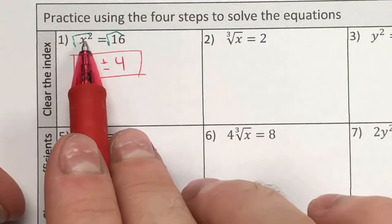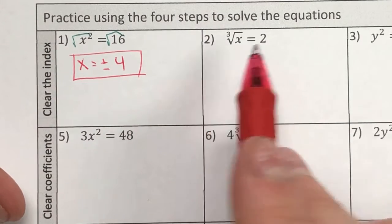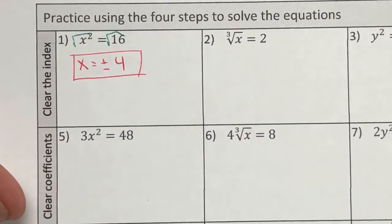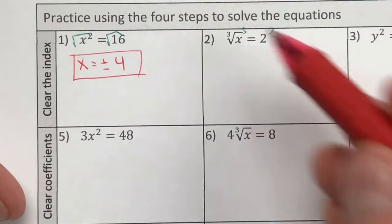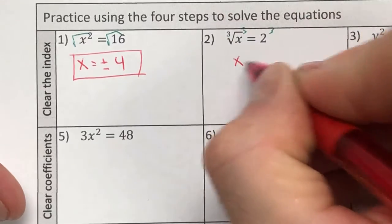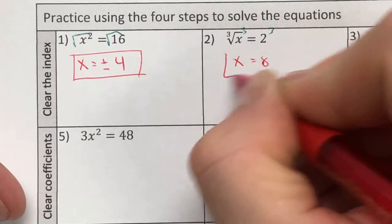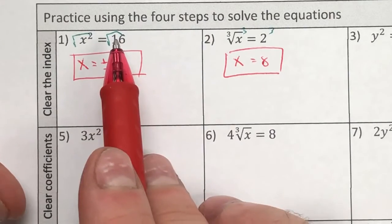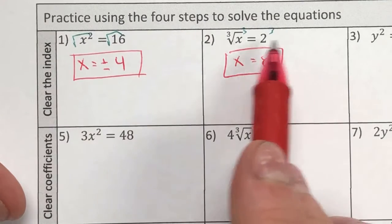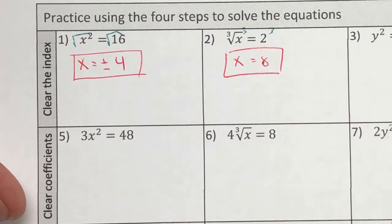Likewise, if the opposite of a power is a root, the opposite of a root is a power. The way that we get rid of these is we go ahead and we cube it. So the cube root of x cubed is going to be x, and 2 cubed is going to be 8. Now the big thing to remember here is, when we take a root, we take both versions. When I use a power, I just have the one.